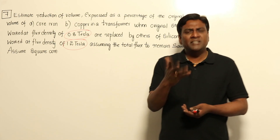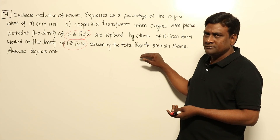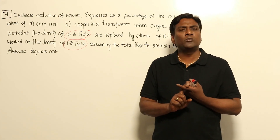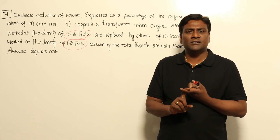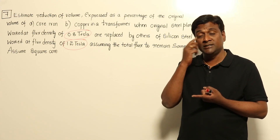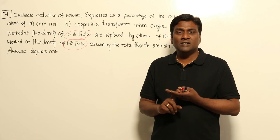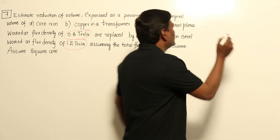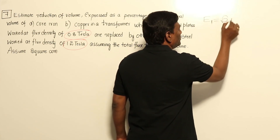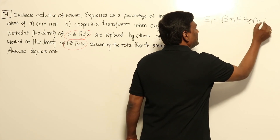Now let us analyze this theoretically. Flux is constant. In a transformer, flux will be constant because V1 supply voltage is going to be constant. If supply voltage is constant — that means the RMS value, AC value, RMS value of injected voltage is constant. If V1 is constant, E1 should be constant. So E1 is going to be root 2 pi F Φ_max N.